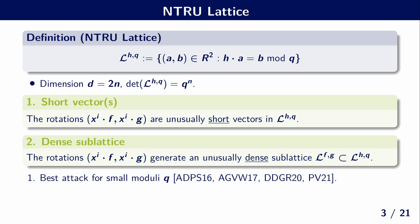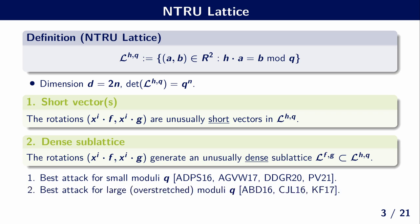The first property gives us the best attack for a small modulus Q, and it is similar to attacks on unique SVP, or what we call unusual SVP. The second property gives us the best attack for a large modulus Q, and this is what we call the over-stretched regime. Our question is: what is the crossover between these two attacks? We define this as the fatigue point.